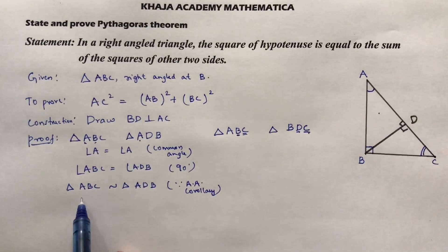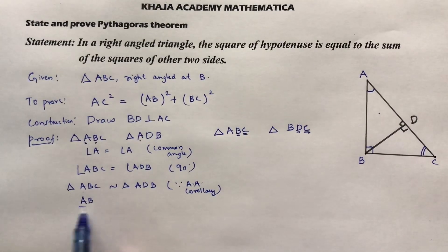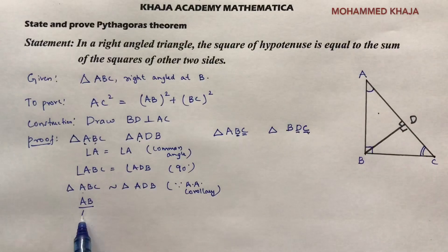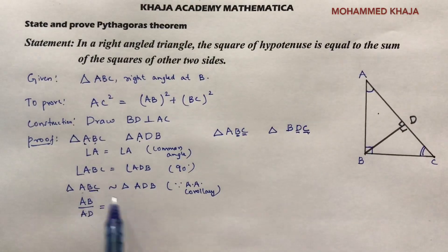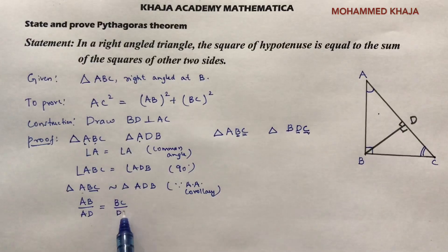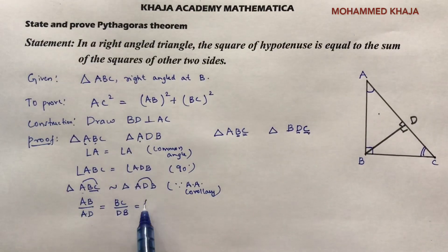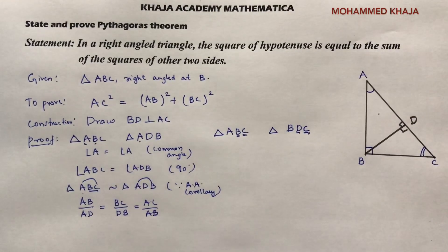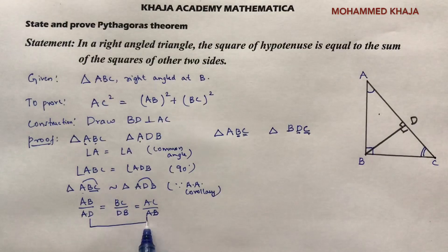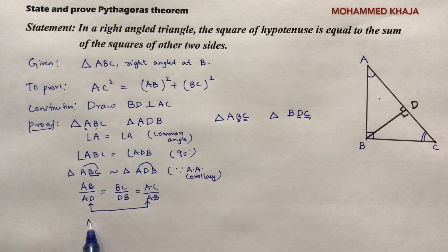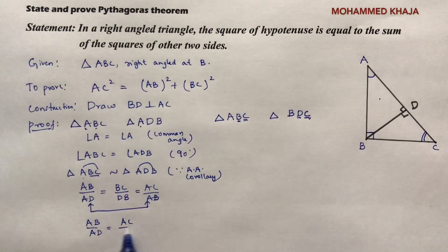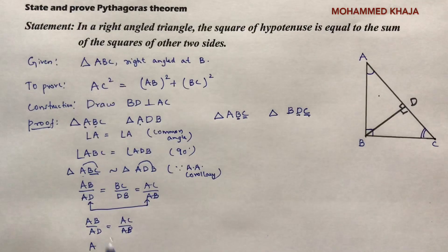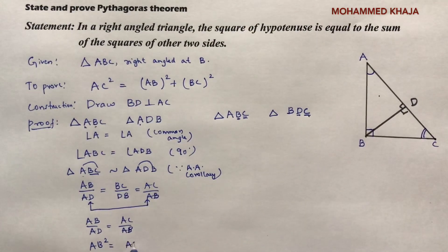Since the triangles are similar, the sides are proportional: AB/AD = BC/DB = AC/AB. I will equate the two ratios that contain AB: AB/AD = AC/AB, which gives AB² = AC × AD. This is equation 1.